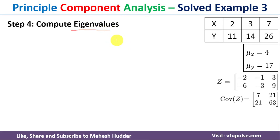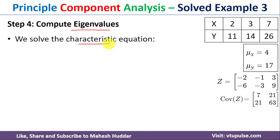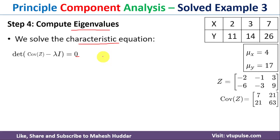Once we have the covariance matrix, we need to find the eigenvalues by solving the characteristic equation: det(Cov(Z) − λI) = 0, where I is the identity matrix with 1s on the diagonal and 0s elsewhere. Multiplying λ by I gives the matrix [[λ, 0], [0, λ]].